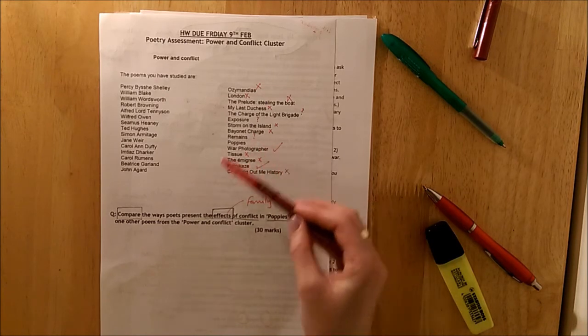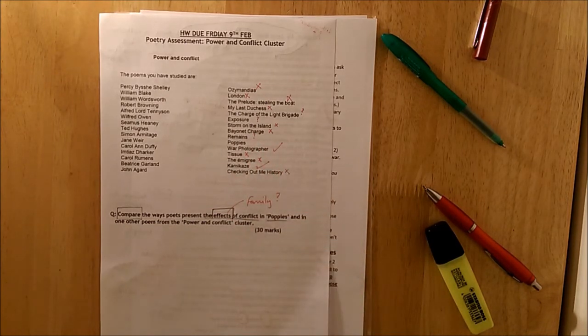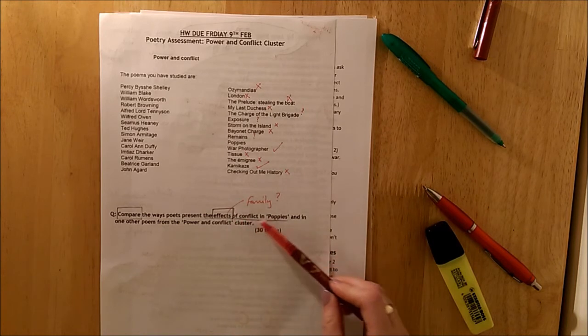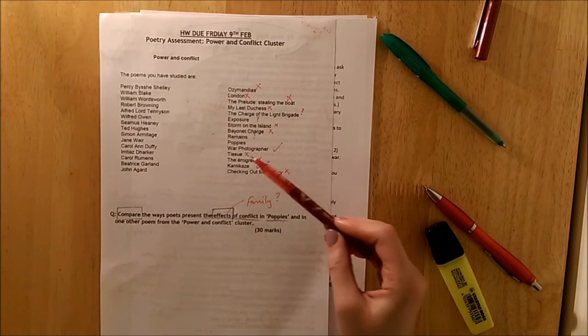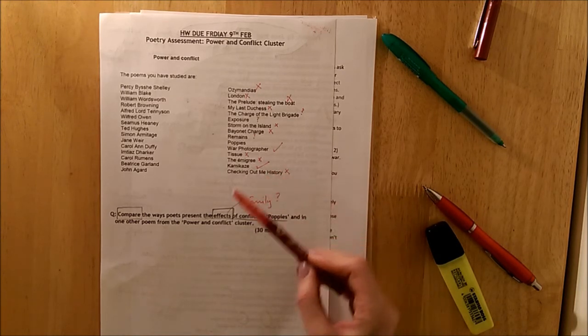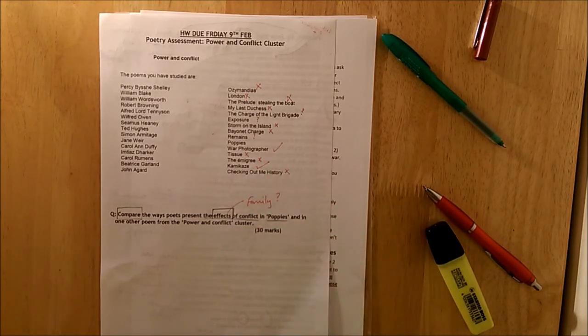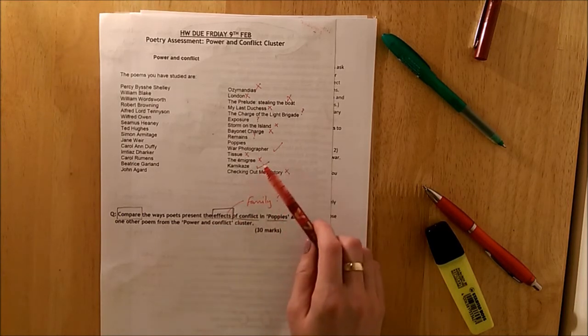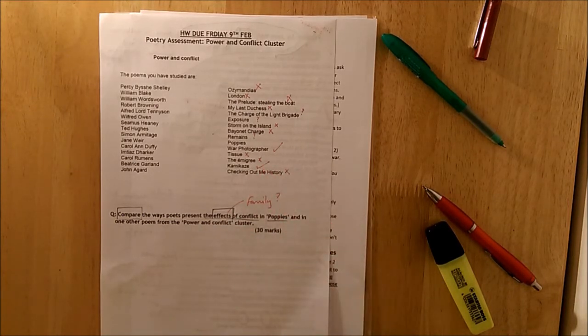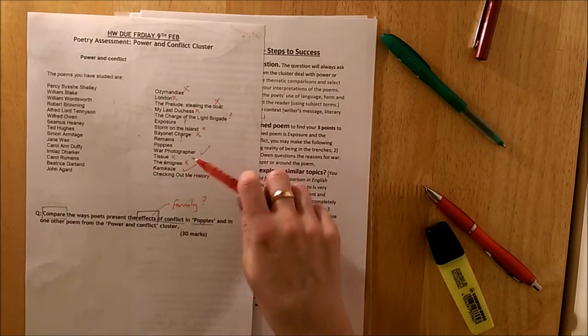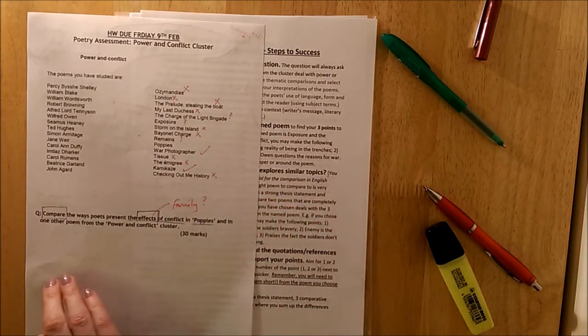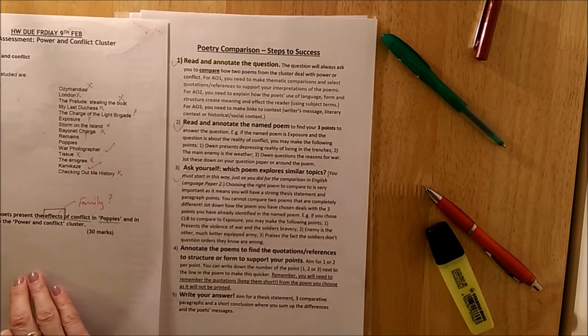But I actually think War Photographer would be a really really good comparison here. Thinking about the effect of conflict. And again it's set at home. Tissue. The Emigree. Checking Out Me History. Again all conflict poems but not quite suitable. The other strong comparison poem would be Kamikaze. Because both of these ones are thinking about family and the effects that war has on a family. I'm going to now plan out a response using War Photographer and Kamikaze as my comparison poems.